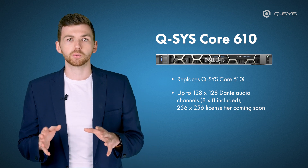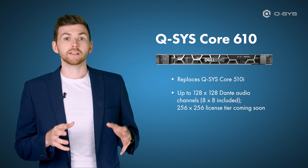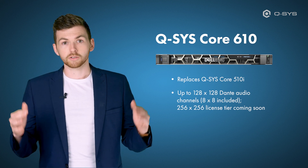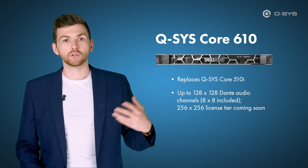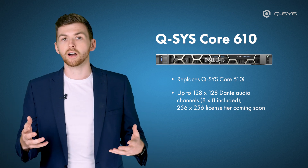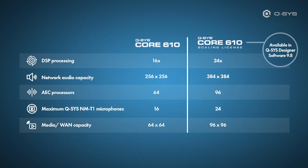The biggest difference between the Core 610 and the 510 is that the 610 does not have card slots, it's much smaller, and you can use the QIO series instead of cards to add additional I/O. It also features a scaling license much like the Core Nano and the Core 8 Flex.